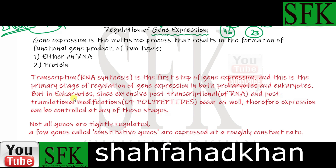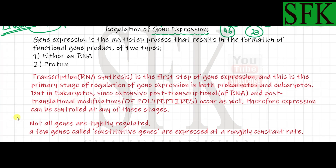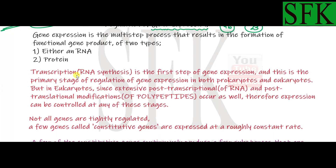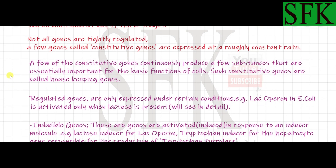In eukaryotes, post-transcriptional modification occurs on the RNA and post-translational modification occurs on the polypeptides formed. Therefore, gene expression in eukaryotes can also be controlled at these stages — the post-translational and post-transcriptional modification stages. In prokaryotes, transcription is the main stage controlled to regulate gene expression, whereas in eukaryotes it can be transcription and other stages as well.